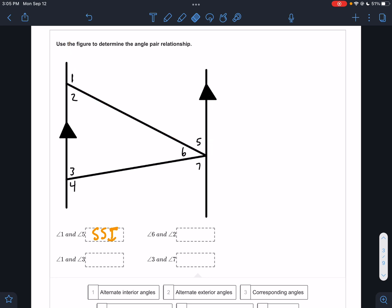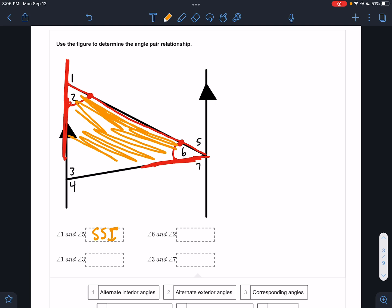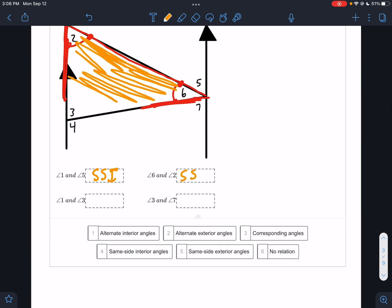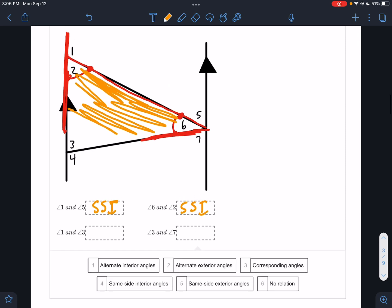Those are on the same side of the transversal, and they're in between the other two lines. The next one is angle 6, trace angle 6, and angle 2, trace angle 2. So here's the transversal for 6 and 2. This is the other line for 2, this is the other line for 6. They're still in between, that's still inside, and they're on the same side of the transversal. So that is another SSI, same side interior.